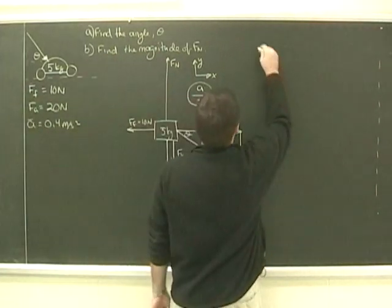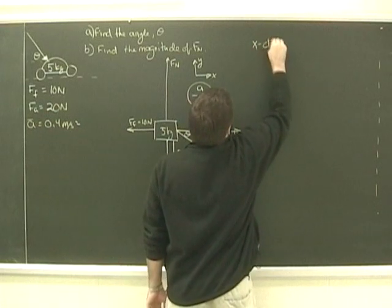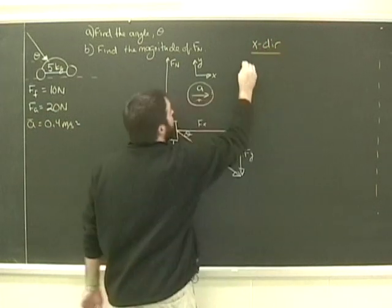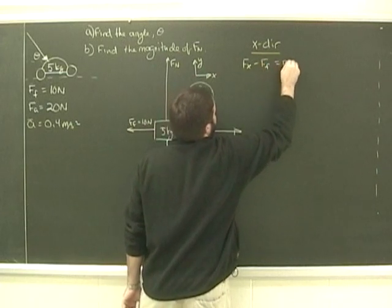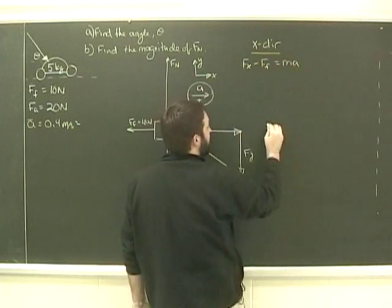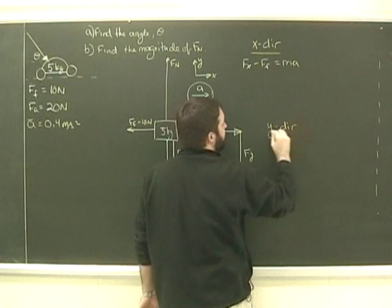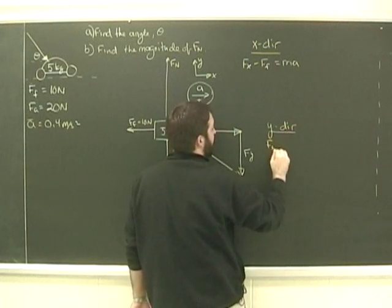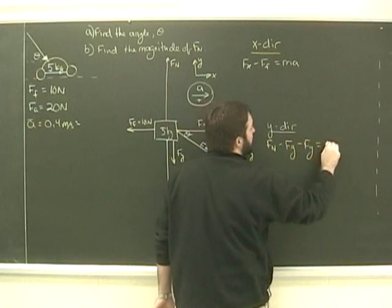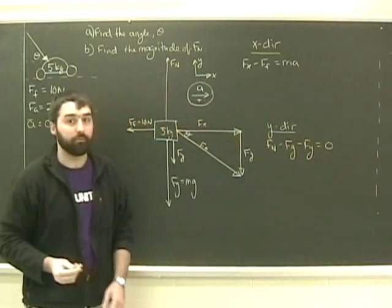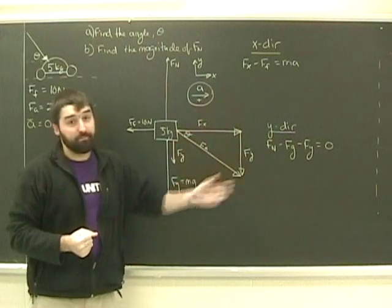Alright, welcome back. So hopefully, in the x direction, you have fx minus ff equals ma. And in the y direction, you have fn minus fg minus fy equals zero. So again, these are pretty generic.